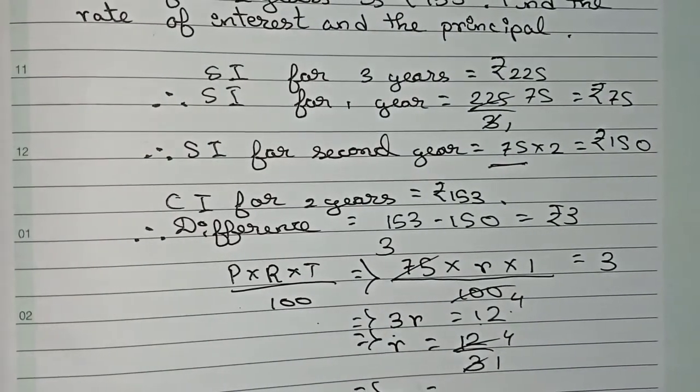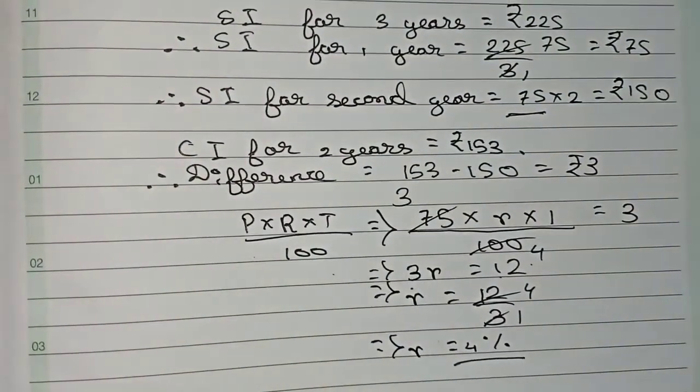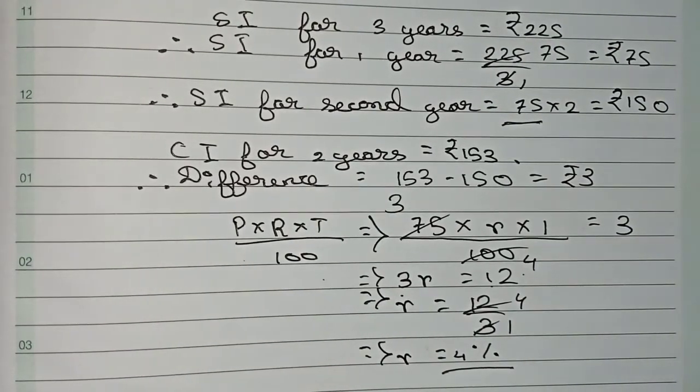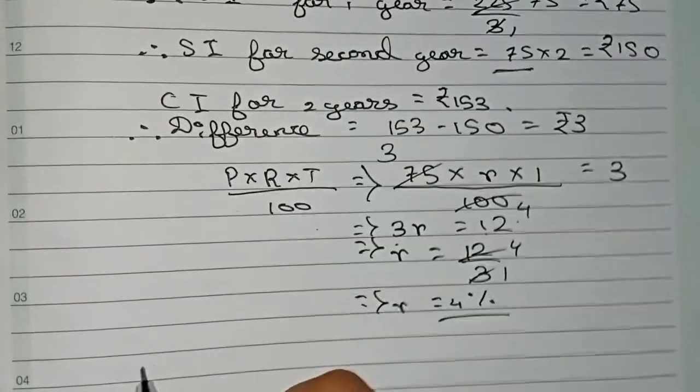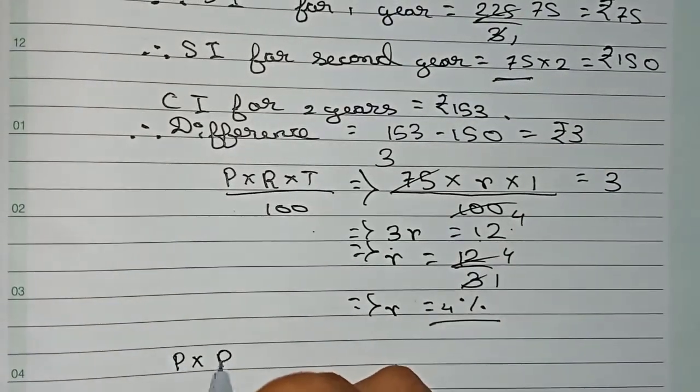So the rate of interest = 4%. Now you can easily find the principal. We know that the simple interest for the first year is ₹75. The formula is P×R×T/100.